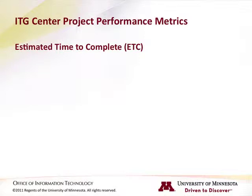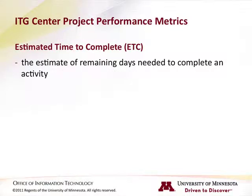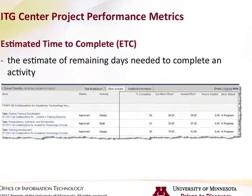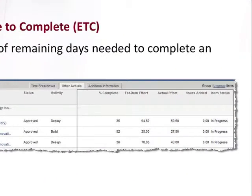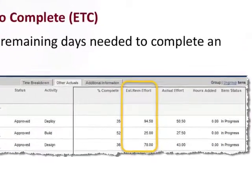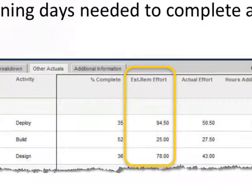Estimated time to complete (ETC). The estimated time to complete is the estimate of remaining days needed to complete an activity. This information is provided on timesheets and it relies upon managers and project participants to update the estimated remaining effort for each task.